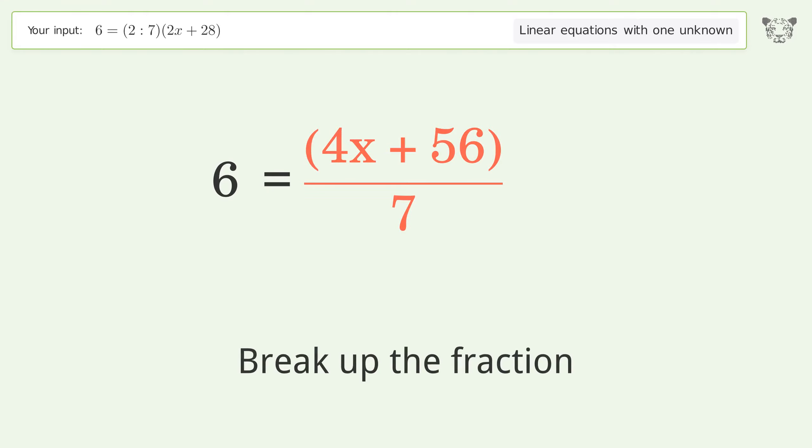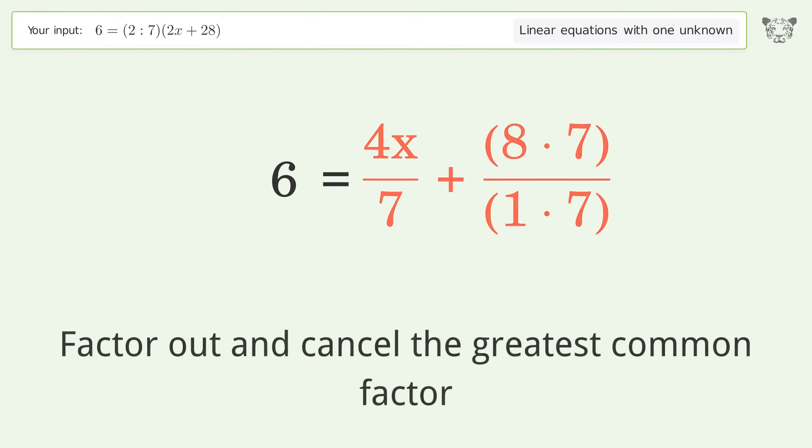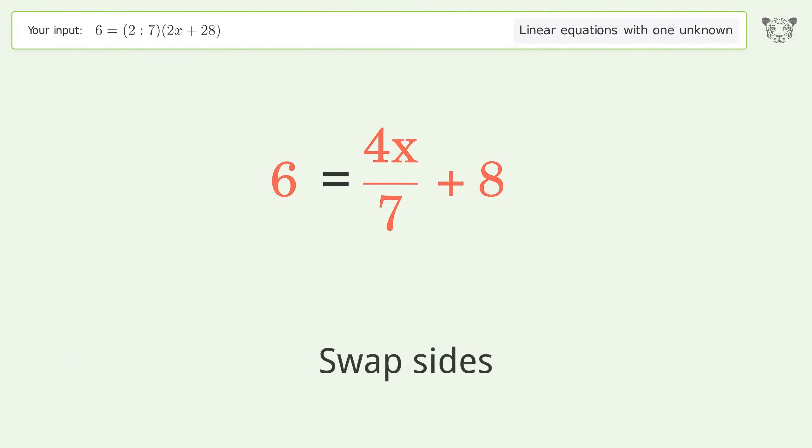Break up the fraction. Find the greatest common factor of the numerator and denominator. Factor out and cancel the greatest common factor. Swap sides.